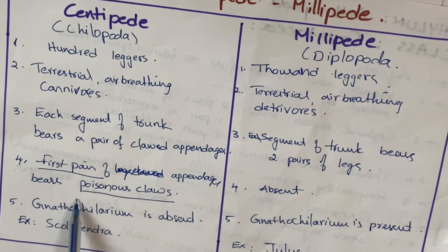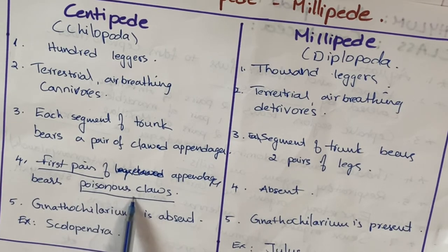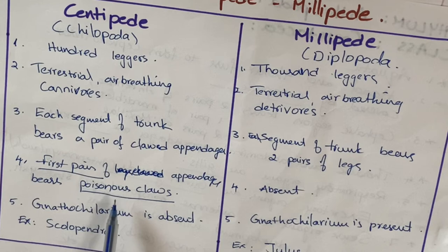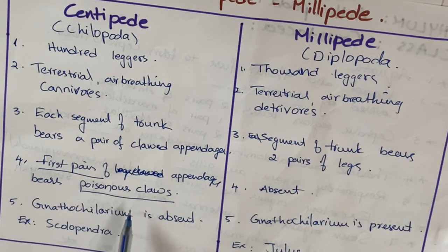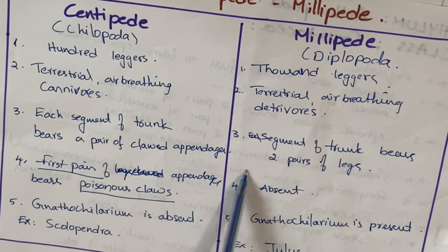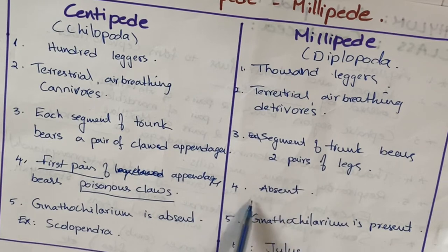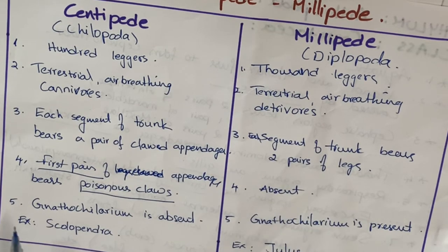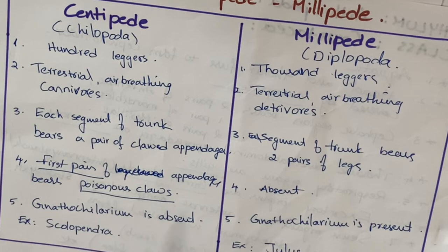The first pair of appendages in centipedes bears poisonous glands. Through the claws, they inject poison into the victim. However, poisonous claws and poisonous glands are absent in millipedes.